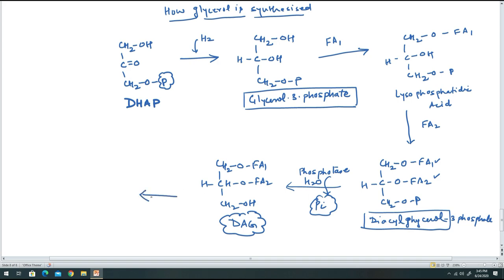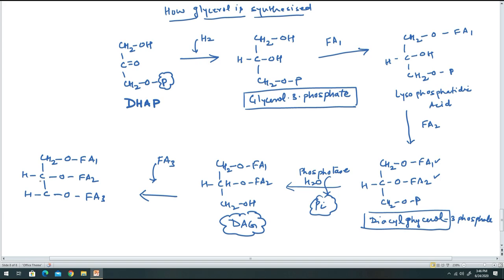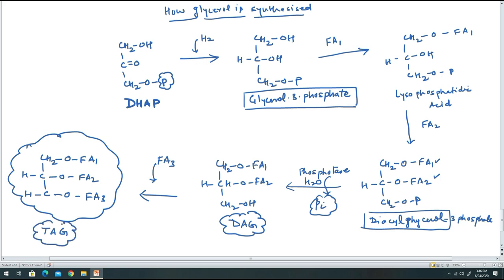Diacylglycerol then accepts fatty acid 3 at the sn-3 position, forming the complete triacylglycerol: CH₂O-fatty acid 1, CHO-fatty acid 2, CH₂O-fatty acid 3. This three acyl group attachment completes the synthesis of triacylglycerol.